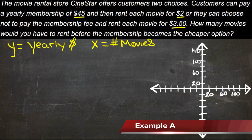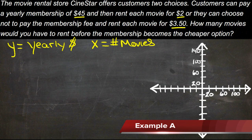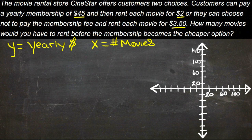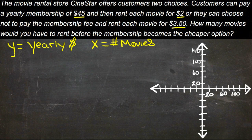Here we have a real-world application of a system of linear equations. We have a movie rental place called Sinistar, which has two choices for movie rentals. Customers can either pay a yearly membership of $45 and then rent each movie for $2, or they can not pay the $45 membership fee and rent each movie for $3.50 instead.